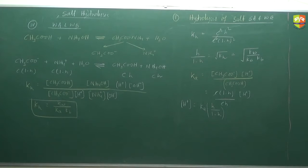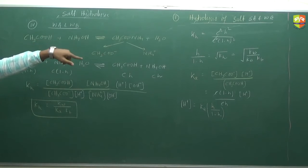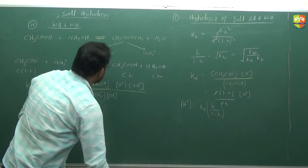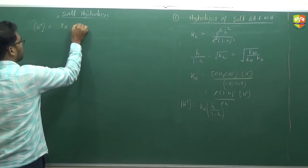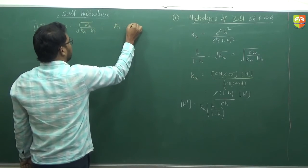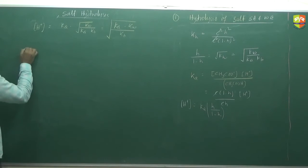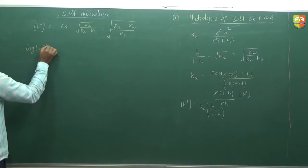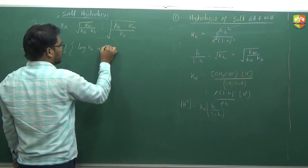We need to find H⁺ concentration for pH. We are not neglecting (1 minus h) here because we need the value of h/(1−h), which we can directly substitute as √(Kw/(Ka·Kb)). So the concentration of H⁺ is Ka times Kw divided by Ka times Kb, which simplifies to √(Ka·Kw/Kb).